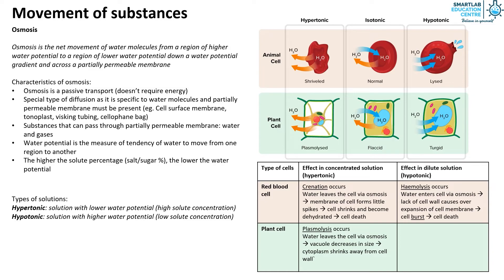If plant cells are placed in hypotonic solution, the cell expands and becomes turgid. Water enters cell via osmosis and the cell increases in size. Cellulose cell wall prevents the overexpansion of cell membrane by exerting an opposing pressure.